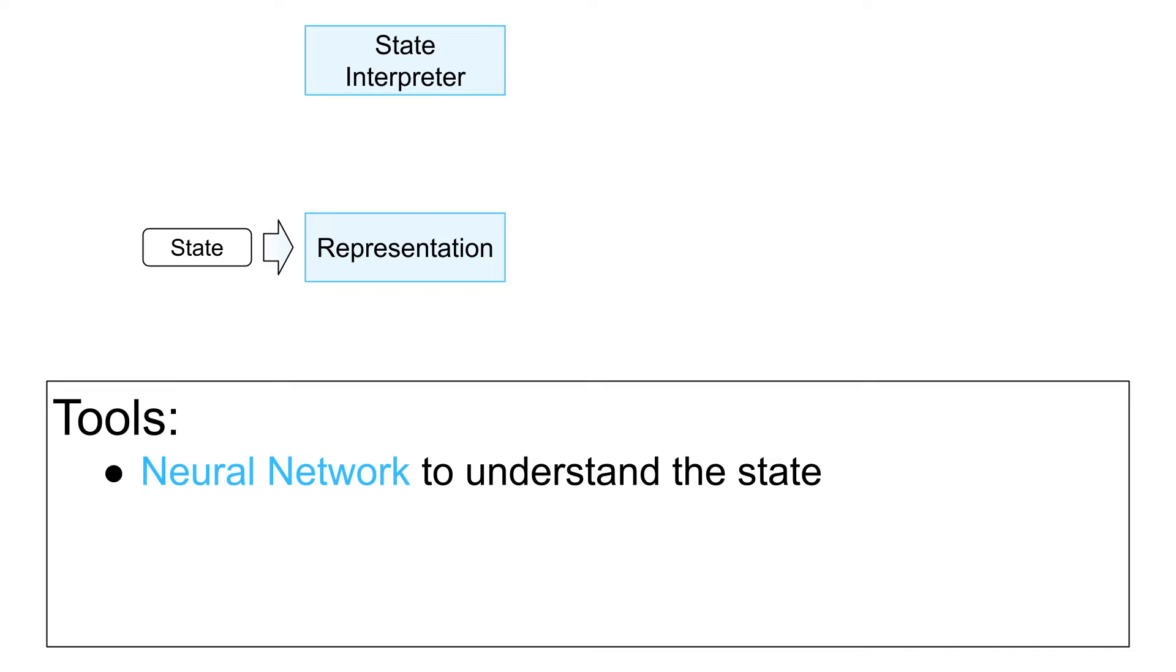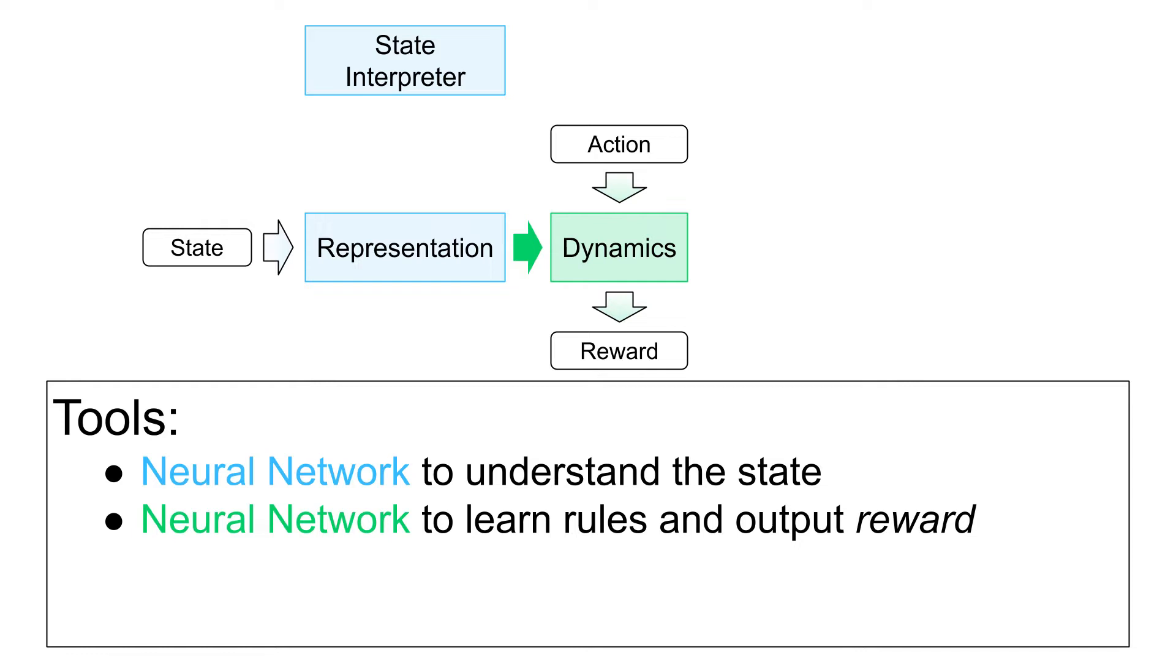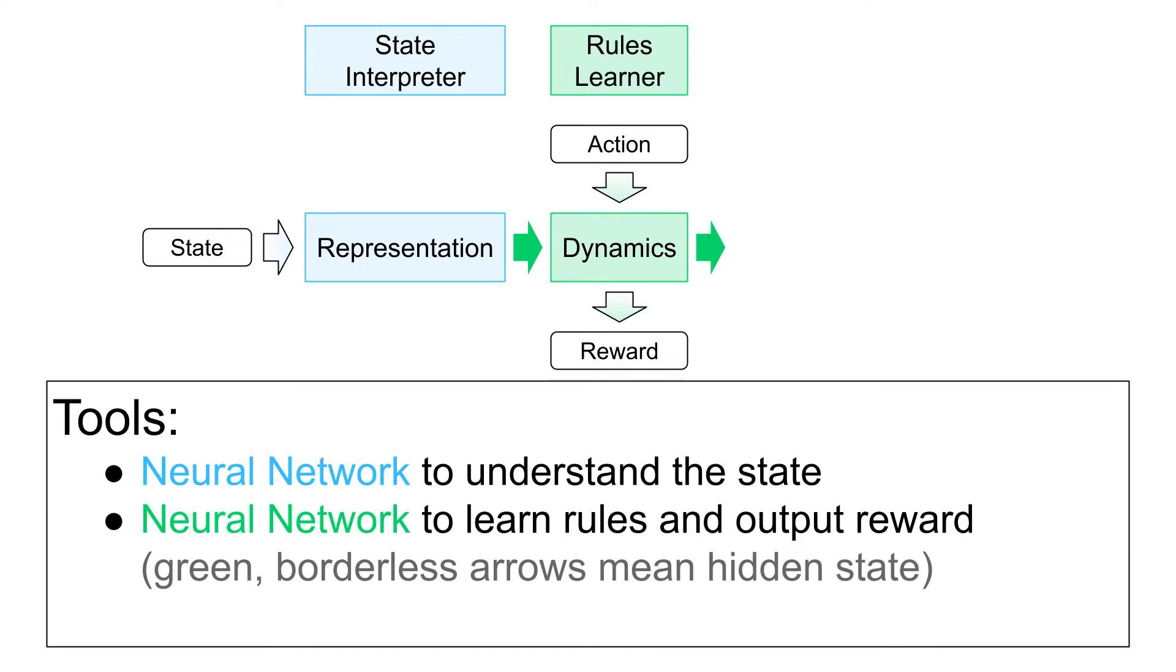The second is called the dynamics network, and it learns the mechanics of the game. The inputs are the interpretation of the state and an action. It learns how the state and actions interact, and then outputs any points scored, also called rewards. This is my favorite network because it will learn the rules of the game from the interpreted states and observed actions, not by programmers' hand-coding logic. Both the representation and the dynamics network output a hidden state, very similar to what we saw in recurrent neural networks. I use these filled green arrows to indicate the hidden state in all future diagrams.